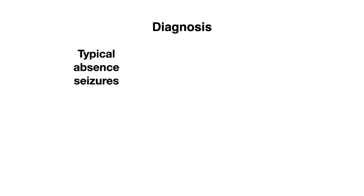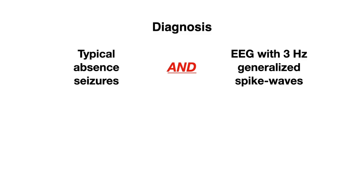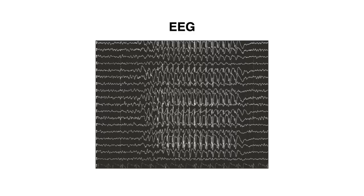So this brings us to the diagnosis of Absence seizures, which involves the typical features we discussed earlier, as well as an EEG, which reveals three hertz of generalized spike waves. Keep these EEG findings in mind because they are often tested on examination. So let's take a look at an EEG strip here. You likely will not have to read an EEG finding on an examination — you'll often just be presented with a finding and have to know how to associate it with an Absence seizure.